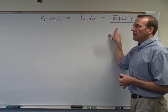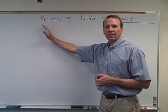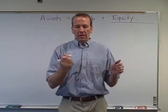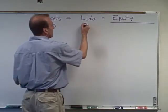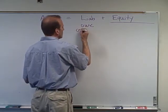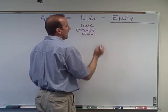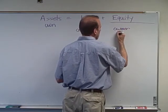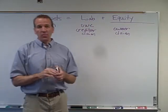The accounting equation states that assets equal liabilities plus equity. Assets are things that we own - that's on one side of the equation. Liabilities is what we owe to somebody else, so we can call those the creditors' claims - it's what creditors have a claim on in our business. Then equity is the owner's claim on the business.